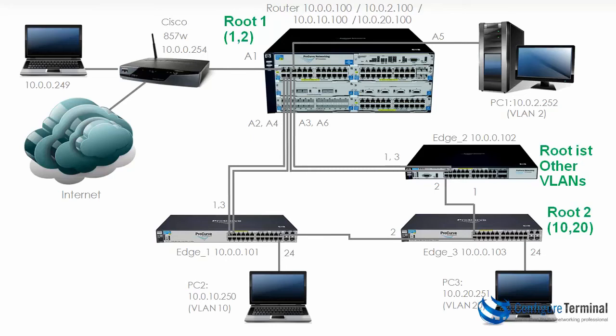For all other VLANs, edge 2 is still the root — you might want to change that behavior. Best practice says your core devices, in this case the router, should be the root of your spanning tree. This topology isn't necessarily a good design because there is no redundancy: if the 5406 went down, all client machines would lose connectivity to the server. In a large environment you'd want to implement redundancy, but be aware that in multiple spanning tree, different switches can be the root for different instances, which affects which ports are blocking and which are forwarding.